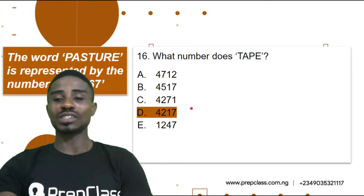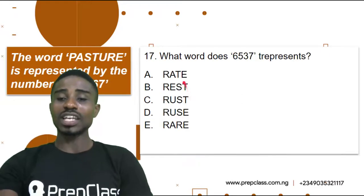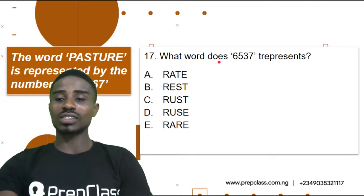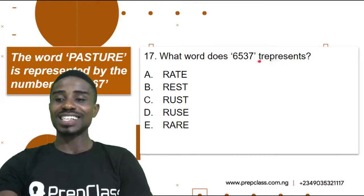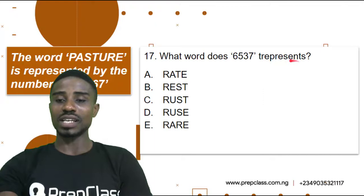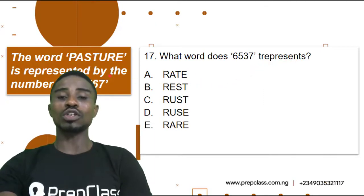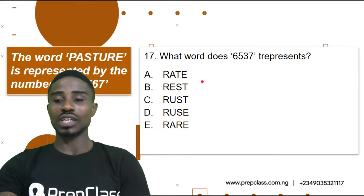Let's move on to the next one. The next question says, what word does 6, 5, 3, 7 represent? There is a typographical error in the question as presented, but we are still going to use this sample to resolve it. Let's check how to get it done.